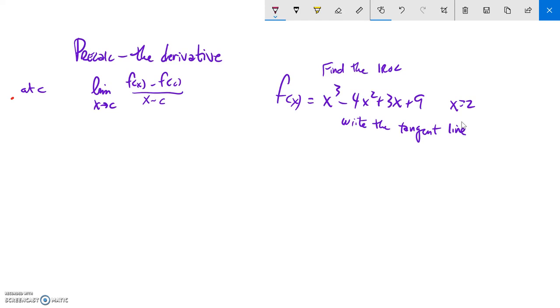Let's take what we know. The derivative is going to be the limit as x approaches 2 of the function itself: x cubed minus 4x squared plus 3x plus 9 minus f(2), the y value.